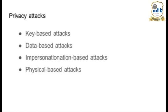Privacy attacks can be classified as: key-based attacks, where the attacker tries to get hold of or forge the key during key exchange; data-based attacks, including chosen plaintext and chosen ciphertext attacks; impersonation-based attacks, where a false identity is used; and physical-based attacks, including collusion where multiple nodes collaborate to launch an attack. All these can be addressed through cryptographic techniques like authentication and authorization protocols.